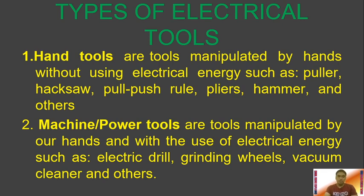Then we have machine or power tools. These are tools manipulated by our hands but with the use of electrical energy. Examples are electric drill, grinding wheels, vacuum cleaner, and others. Machine tools are still manipulated by hands but they utilize electrical energy in order for the tools to work in their proper function.